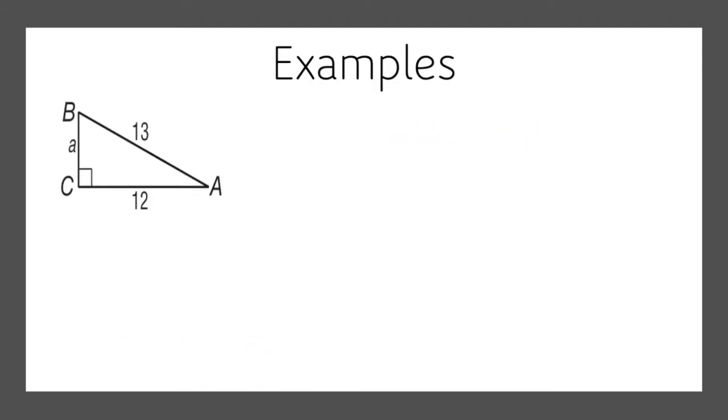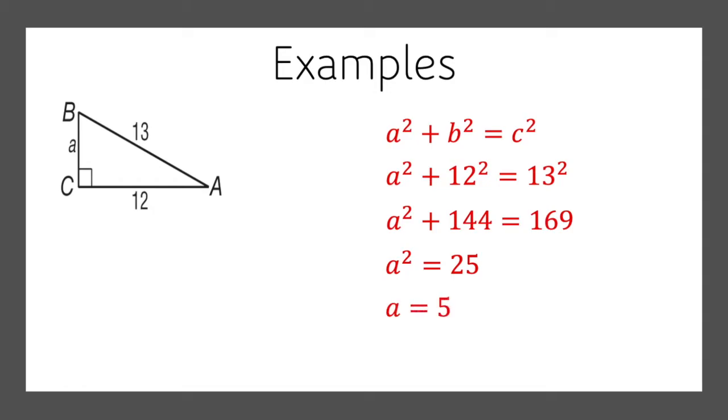Here's a triangle. We're missing a leg, but we know the other leg, and we know the hypotenuse. So we know that a squared plus b squared equals c squared. So a is what we're missing, plus 12 squared equals 13 squared. So 12 squared is 144. 13 squared is 169. We'll subtract 144 from both sides, and we get a squared equals 25. Take the square root of both sides. We know that a, the missing leg, is 5. Let's try another one.